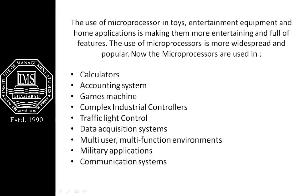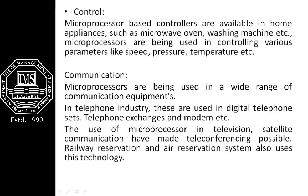Moving on to control applications — microprocessor-based controllers are available in home appliances such as washing machines. Microprocessors are used to control various parameters like speed, pressure, and temperature. Similar examples can be seen in sports for measurement purposes, and in hospitals for measurements like heartbeat monitoring.